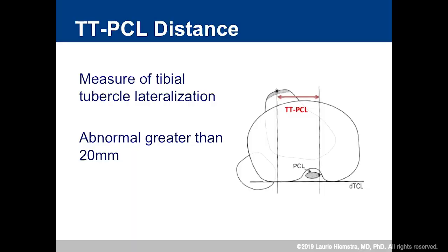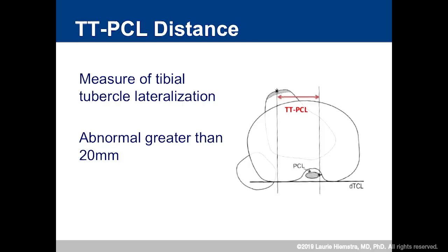That TTTG being high is really just a red flag for me — it tells me something's wrong. A TT-PCL distance is a totally tibial-based measurement that should give you an idea of whether that tubercle is lateralized. I encourage everyone to make this measurement in all their patients, and you'll find that tubercle lateralization is probably a lot less common than you think. If the TT-PCL distance is high, I know my tubercle is lateralized, and then I really start considering a tubercle medialization.